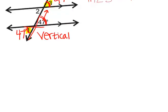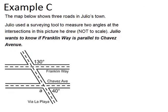Alright, let's go to the last example. This one says, the map below shows three roads in Julio's town. Julio used a surveying tool to measure two angles at the intersections in this picture he drew, which is not to scale. Julio wants to know if Franklin Way is parallel to Chavez Avenue. Alright, so let's look at this picture.